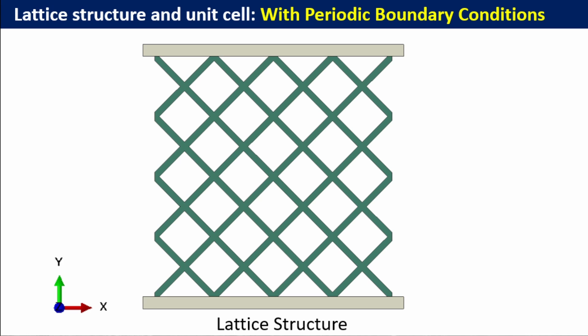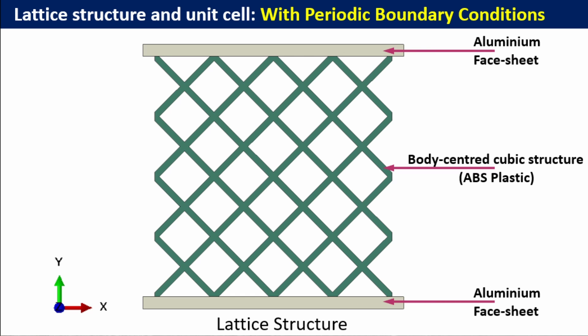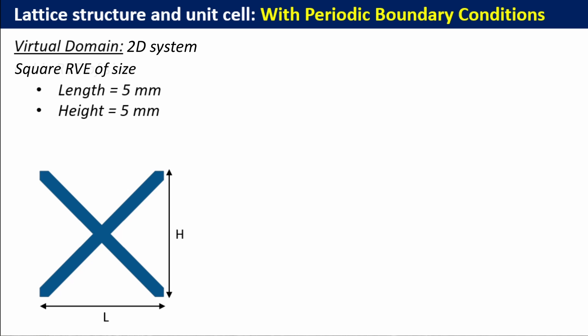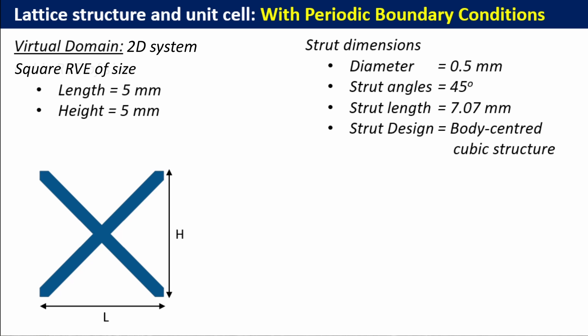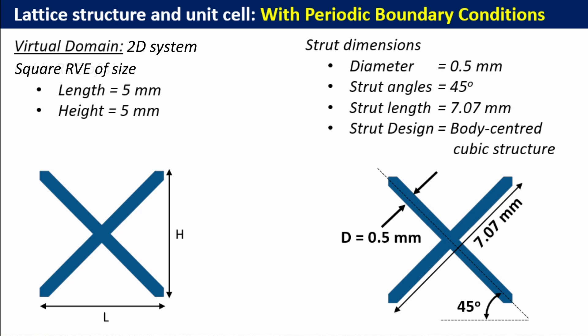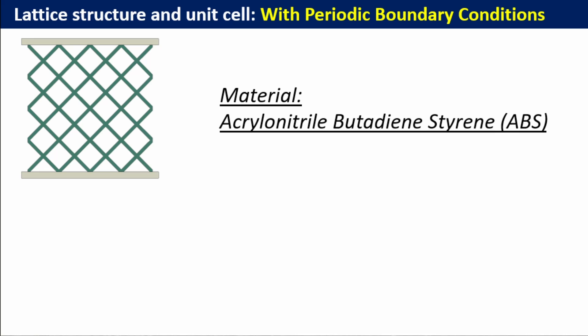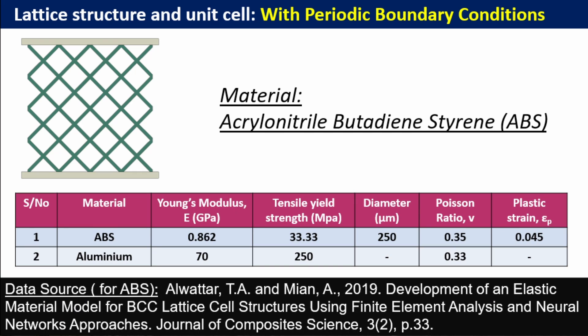We'll use a unit cell approach, but it will be a much larger unit cell for our analysis. The virtual domain is a body-centered cubic structure with aluminum face sheets on the top and bottom. This is a 2D BCC structure with a length and height of 5mm by 5mm. The strut diameter is 0.5mm — however, since we're modeling in 2D it will be a planar structure. The strut orientations and dimensions are all specified, and the material in the center is ABS plastic with the aluminum used for the face sheets.